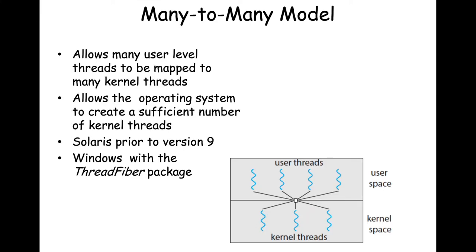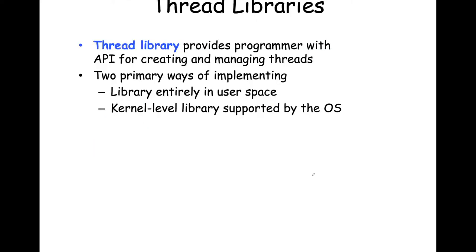Where we last left off, we talked about different thread models, and lastly the most complex thread model, namely many-to-many. In that many-to-many model, we had M many kernel threads associated with N many user-level threads. This lets you bound the number of threads for all applications instead of a one-to-one mapping, since you can quickly run out of the finite kernel threads available on your OS.